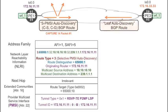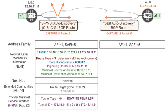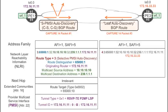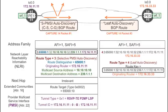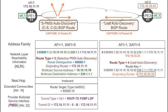The leaf auto-discovery route has route Type 4 and two components. First, the route key is simply the original selective PMSI auto-discovery route that PE1 sent in the first place — PE3 basically tells PE1 'here is my reply to this route of yours.' The other critical component of the leaf auto-discovery route is the originating router — in this case, the router ID of PE3. In this way, PE3 is identifying itself as being interested in becoming a leaf of this selective P-tunnel.